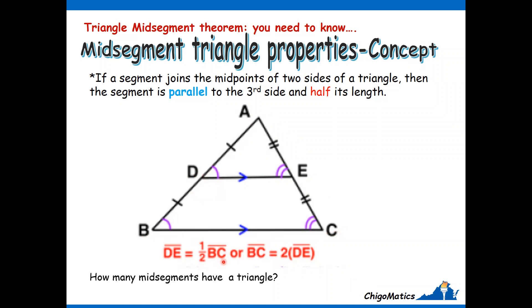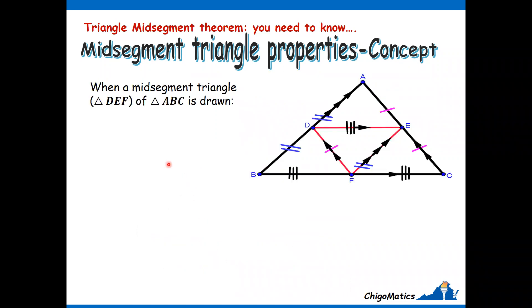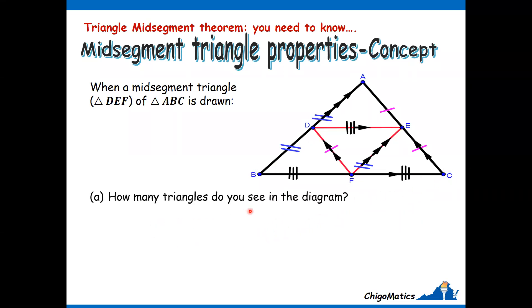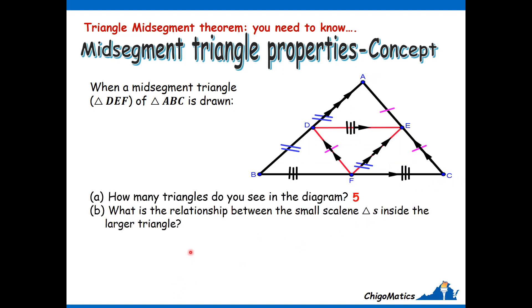How many mid-segments does a triangle have? There are three mid-segments. When a mid-segment triangle DEF of triangle ABC is drawn, how many triangles do you see in the diagram? We have triangles number one, two, three, four, and the outside triangle ABC. So in essence there are five triangles.